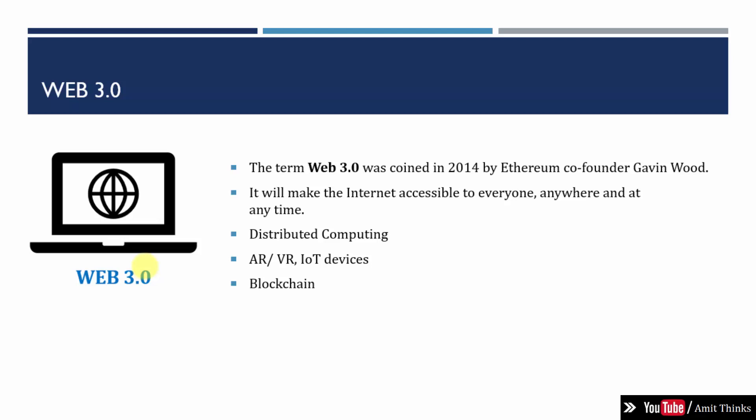Now we have Web 3.0, which was coined by Gavin Wood, Ethereum co-founder. Ethereum is a decentralized open-source blockchain. Web 3.0 is considered to make the internet accessible to everyone — and more than just accessible, you will actually be able to live in it. The concept of distributed computing, AR/VR, IoT, wearable devices, and blockchain are all part of Web 3.0. Blockchain was popularized by Satoshi Nakamoto in 2008 for creating a public transaction ledger for the cryptocurrency Bitcoin.